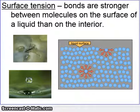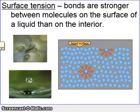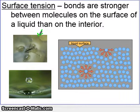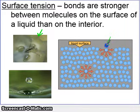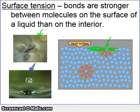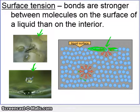Surface tension is a physical property where bonds are stronger between molecules on the surface of a liquid than in the interior. This is why bugs like a water strider can walk on water — the surface of the water has a strong film. Surface molecules bond more strongly with their neighbors because they have fewer molecules to bond with, allowing them to form stronger bonds. Surface tension is also why water droplets form spheres, and why water in the absence of gravity in outer space forms spheres — the surface pulls the water molecules inward.